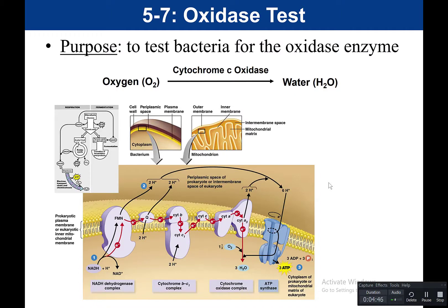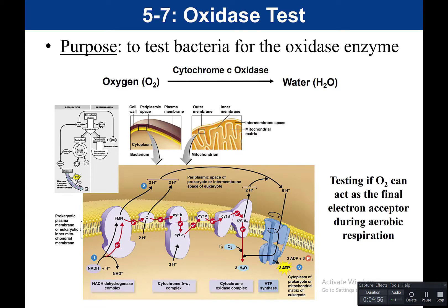The purpose of the oxidase test is to test bacteria for the oxidase enzyme — do they produce oxidase? What that essentially does is test if oxygen can act as the final electron acceptor during aerobic respiration. The electron transport chain is the last step in cellular respiration. In eukaryotic cells, this takes place in the cristae, which is the inner mitochondrial membrane. In prokaryotic cells, which don't have membrane-bound organelles or mitochondria, this reaction takes place within the cell membrane.